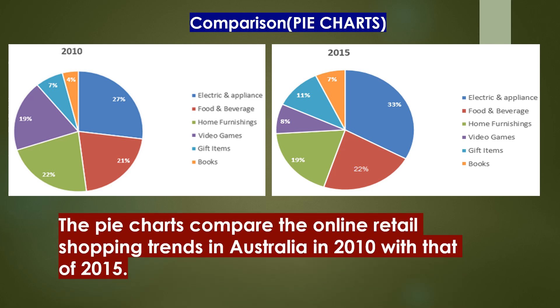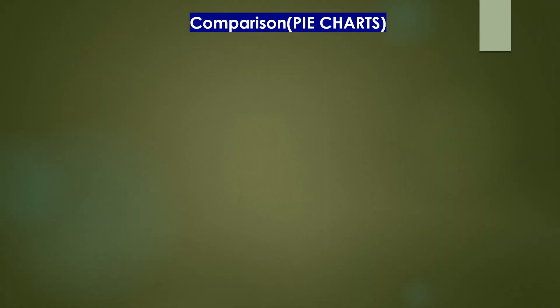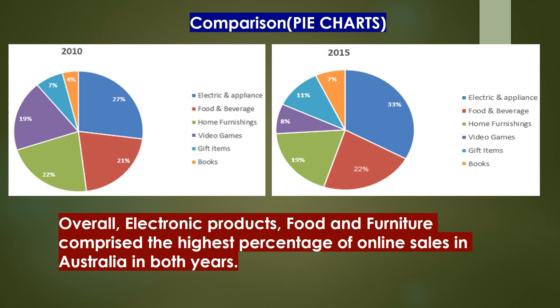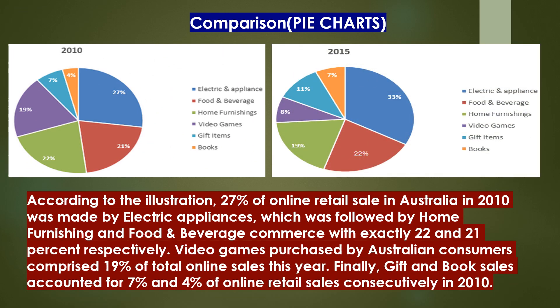Let me present an ideal answer that can help you score a good band. The pie charts compare the online retail shopping trends in Australia in 2010 with that of 2015. Overall, electronic products, food and furniture comprise the highest percentage of online sales in Australia in both years. According to the illustration, 27% of online retail sales in Australia in 2010 was made by electric appliances, which was followed by home furnishing and food and beverage with exactly 22% and 21% respectively. Video games purchased by Australian consumers comprise 19% of total online sales this year. Finally, gift and book sales accounted for 7% and 4% of online retail sales consecutively in 2010.